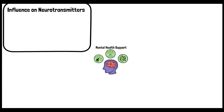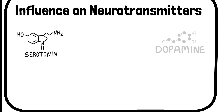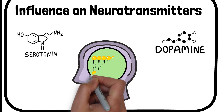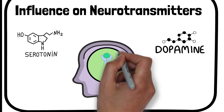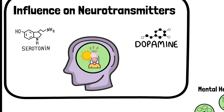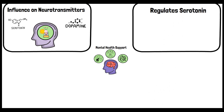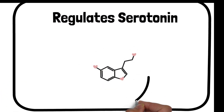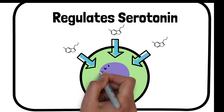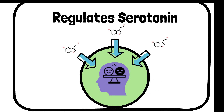Neurotransmitters like serotonin and dopamine play a crucial role in mood regulation and mental health. Inositol is part of the phospholipids that make up cell membranes, which are important for the receptors and transmission of these neurotransmitters. By influencing these neurotransmitter pathways, inositol can help stabilize mood and reduce symptoms of mood disorders. Serotonin is often referred to as the feel-good neurotransmitter, and inositol helps in its regulation, potentially alleviating conditions like depression and anxiety where serotonin imbalance is often a factor.